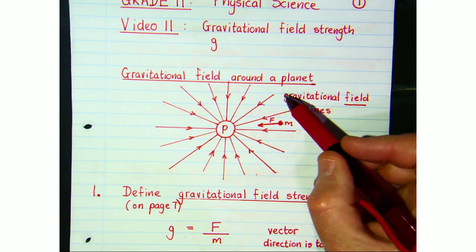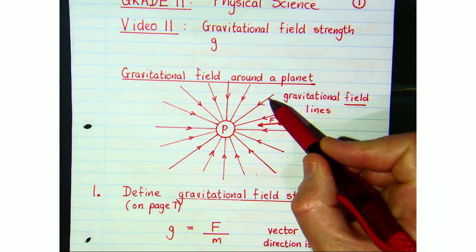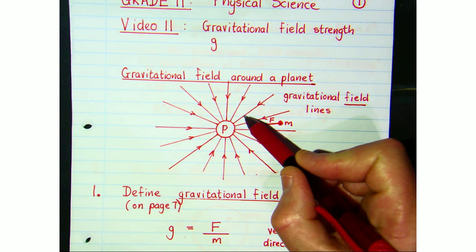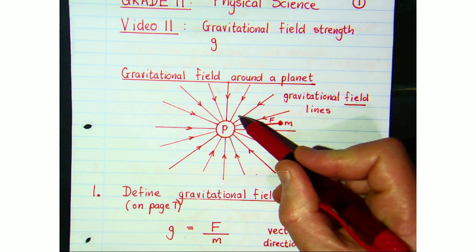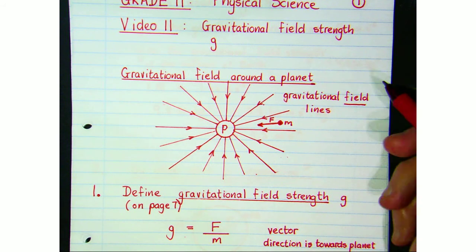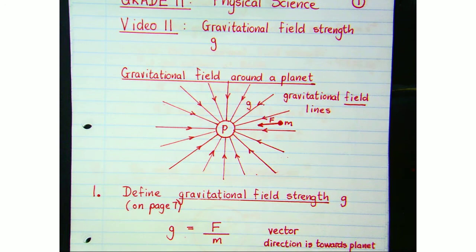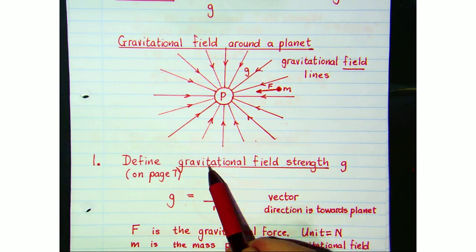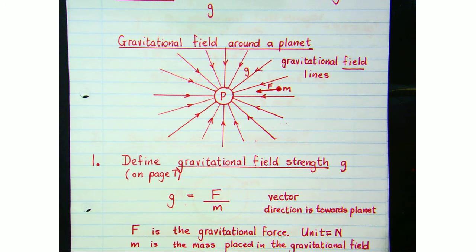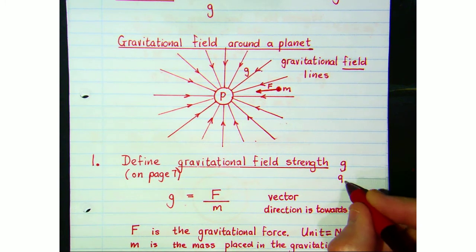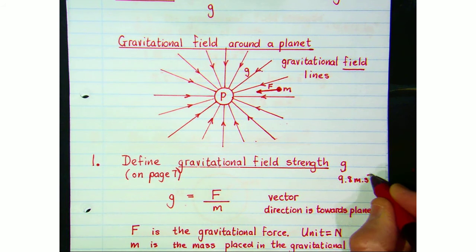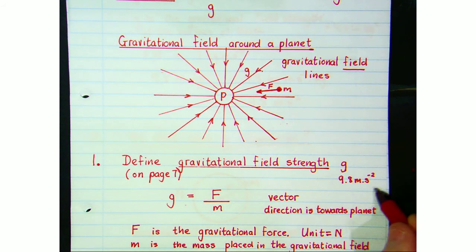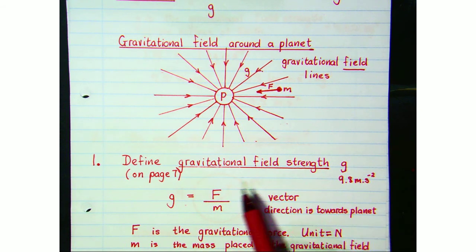The question in this video is: what is the strength of the gravitational field as we get closer to the planet or as we move further away? Does it get stronger or weaker? What does the gravitational field strength g depend on? We need to define gravitational field strength, and we need to go back to how it was defined to be able to get to that answer.